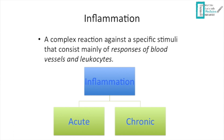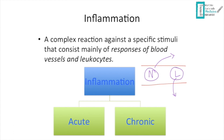To explain inflammation simply: imagine a blood vessel containing inflammatory cells like neutrophils and lymphocytes. When a trigger like infection occurs, neutrophils exit the vessel — this is acute inflammation. When lymphocytes exit into the interstitium, this is chronic inflammation.